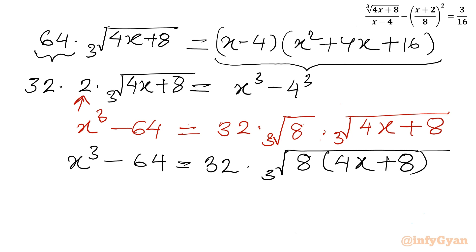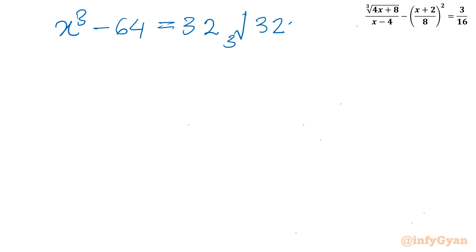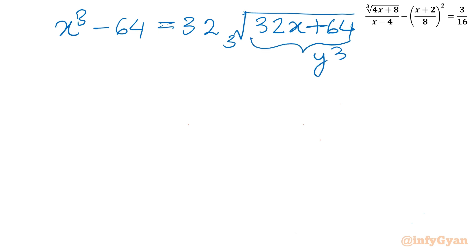Now it is time for substitution. I will set the radicand equal to y³. So I can write the equation as: x³ minus 64 equals 32 times cube root of y³, which is 32y. The radicand gives us: y³ equals 32x + 64.